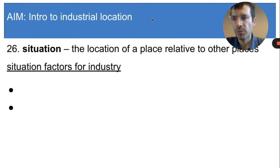The other group of important factors are called situation factors. Situation means the location of one place relative to other places. It does not refer to the things that are in a location, but instead to things that are near a location.